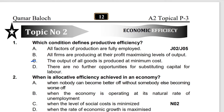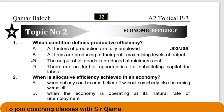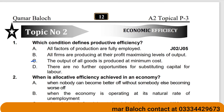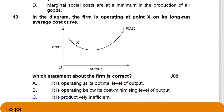Question 2: when is allocative efficiency achieved in an economy? There are two definitions: one is when marginal social cost equals marginal social benefit, and the other is when nobody can become better off without making someone else worse off. Option A is the correct answer — when nobody can become better off without somebody else becoming worse off.